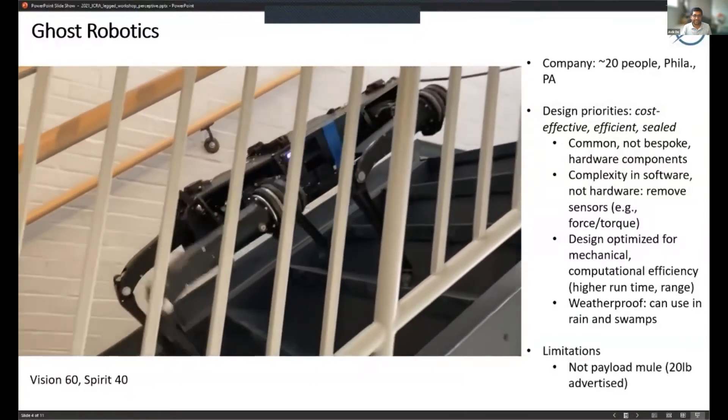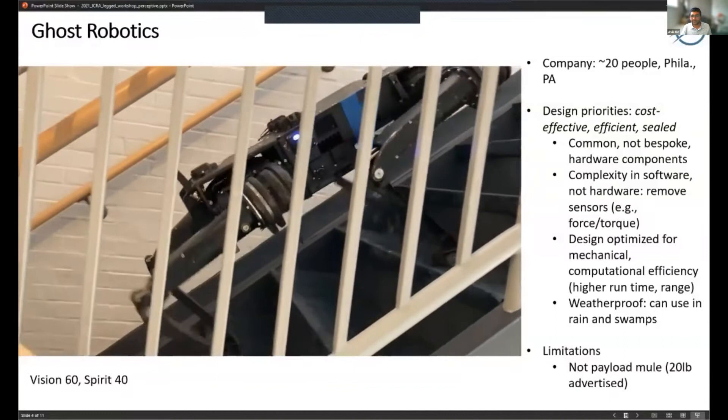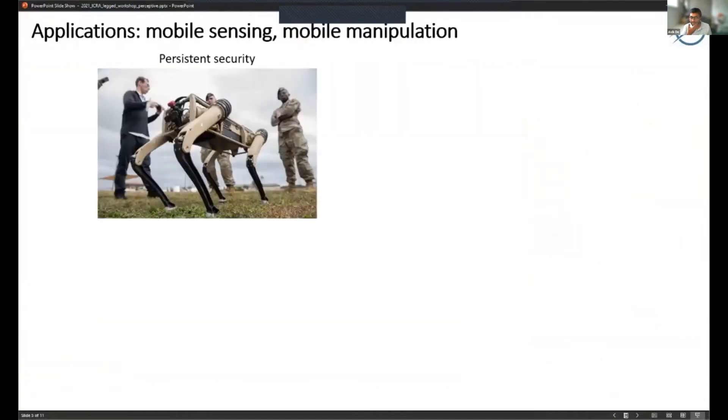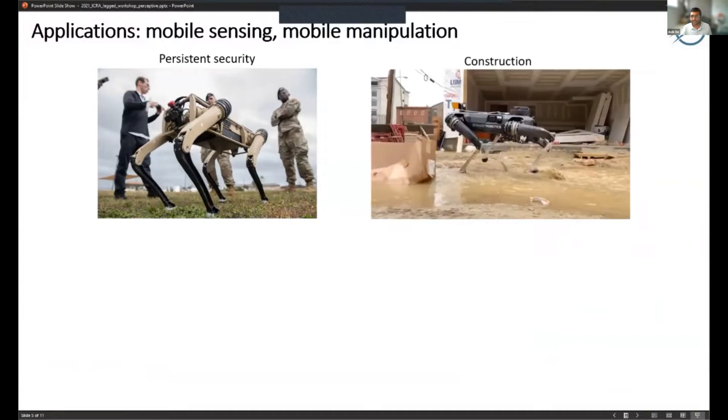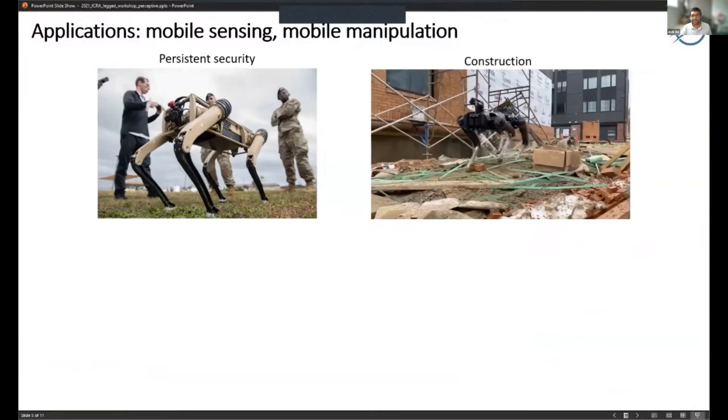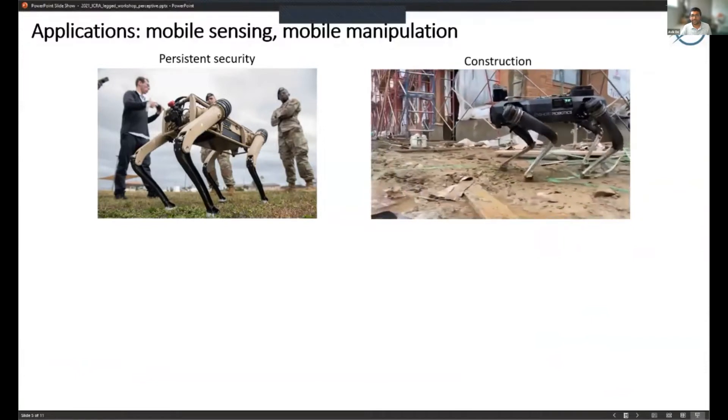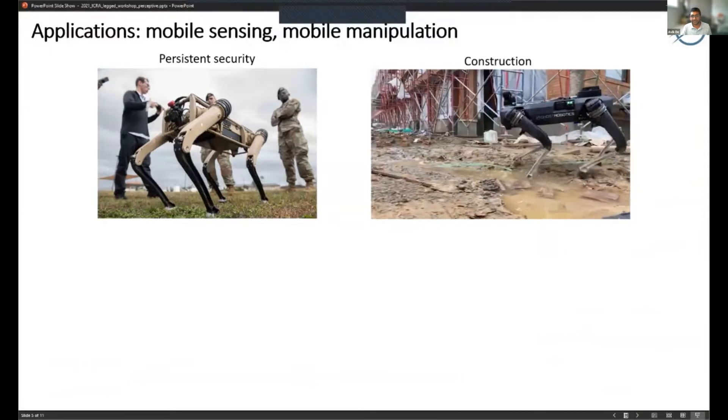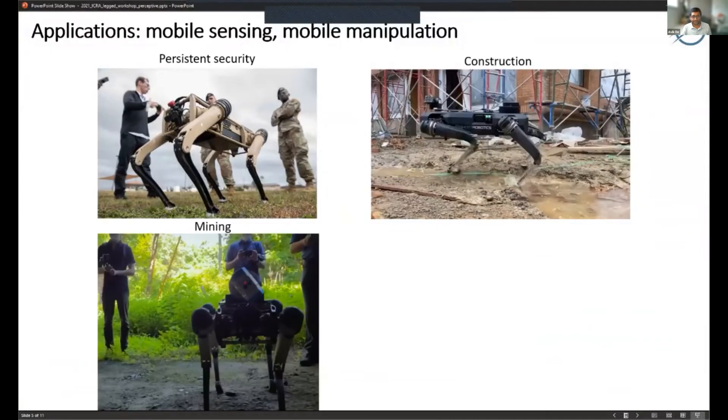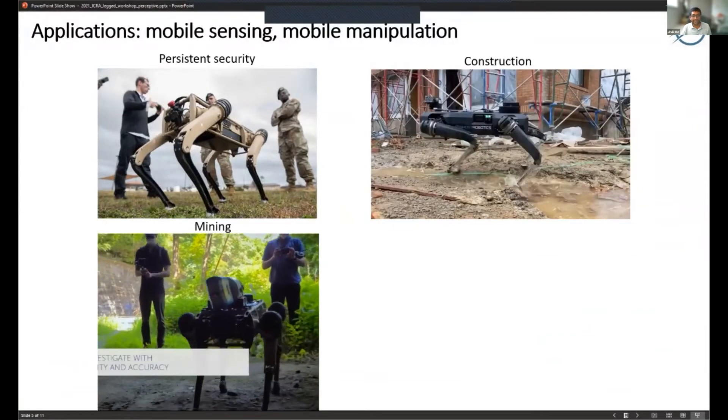The limitation is that we don't advertise a ton of payload. The applications the robot's being used for now include security deployments - the robot wanders around carrying cameras to do security. Also in construction, the robot's mostly doing mobile sensing, carrying around higher fidelity sensors that can capture data for mapping environments. Pretty similar in mining.